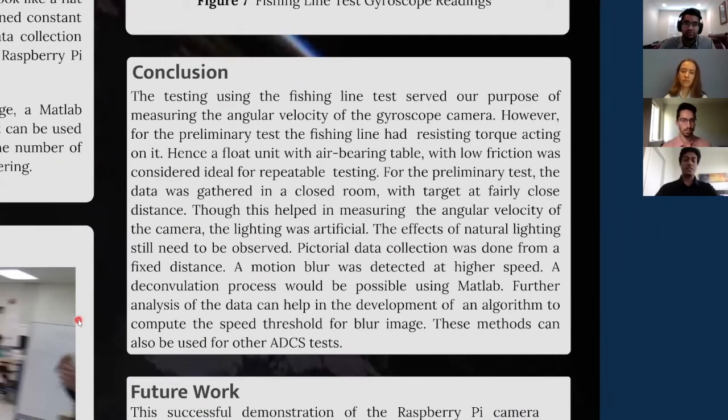The testing using fishing line tests served the purpose of measuring the angular velocity of gyroscope camera. However, for the fishing line, there was a resisting torque acting on it. Hence, a float unit would be considered ideal for repeatable testing. For the first test, the data gathered was in a closed room with a target at fairly close distance. So even though this helped us in measuring the angular velocity of the camera, the lighting was artificial and the effects of natural lighting still need to be observed. A motion blur was detected at higher speed. Hence, to remove it, a deconvolution process would be possible using a MATLAB function. Further analysis of data can help us in development of an algorithm to compute the speed threshold for a blur image. These methods can also be used for other ADCS tests.